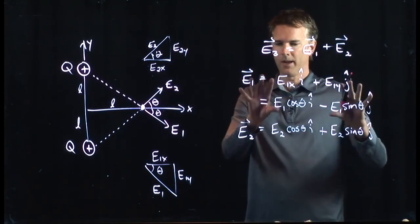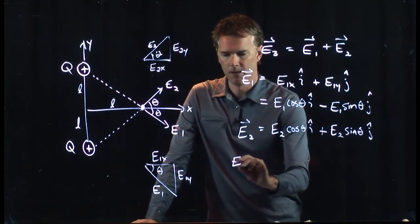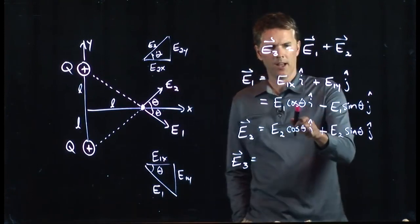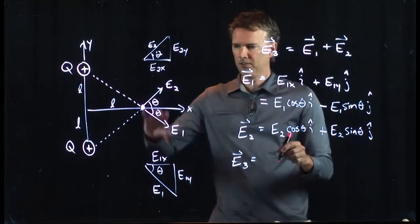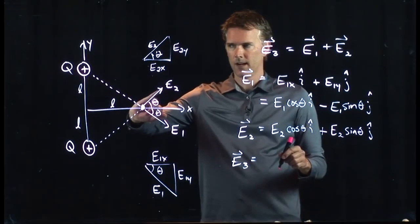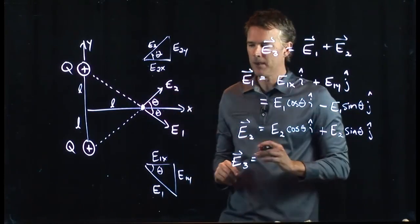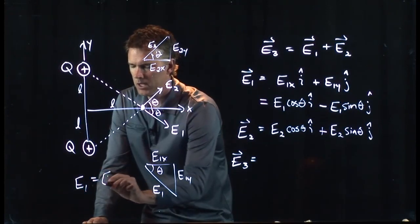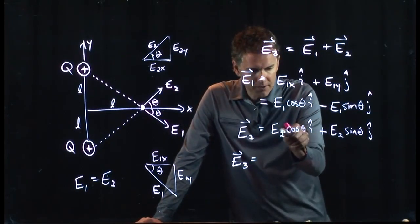Now we have E1 and we have E2. And so we can add them up to get our resultant E. E3 is going to be what? Well, let's just look at this. I have E1 cosine theta, E2 cosine theta. But by symmetry, those have to have the exact same strength. Right? Same charge, same distance. Everything is symmetric. So E1 has to be equal to E2. E1 equals E2. And so we can rewrite this with ones here.